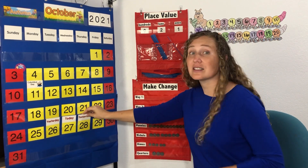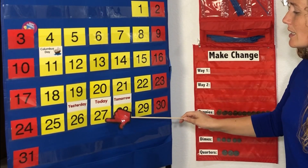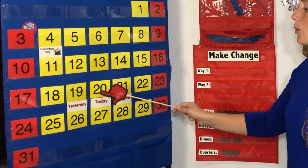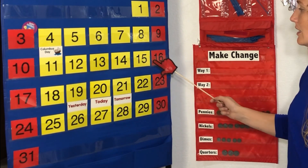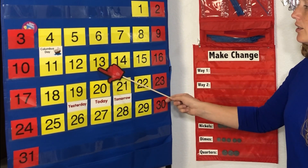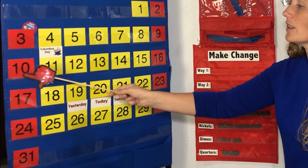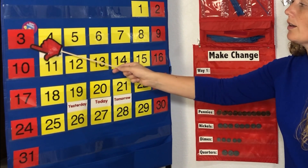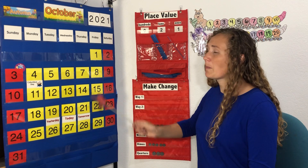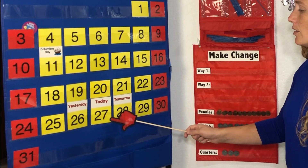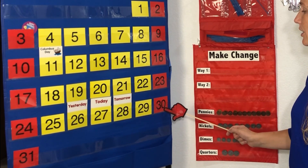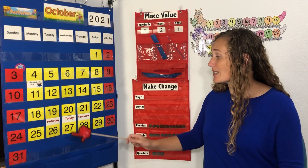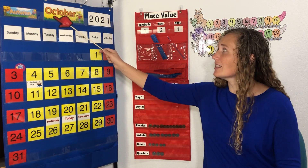Let's count down from 27 together. 27, 26, 25, 24, 23, 22, 21, 20, 19, 18, 17, 16, 15, 14, 13, 12, 11, 10, 9, 8, 7, 6, 5, 4, 3, 2, 1. Now let's count up from 27 together. 27, 28, 29, 30, 31, and the end of the month. Today's number is the number 27. It's the 27th day of October.